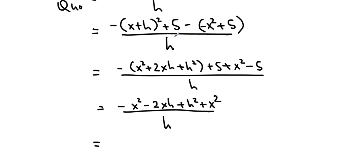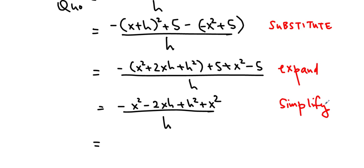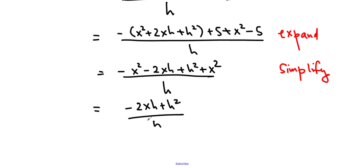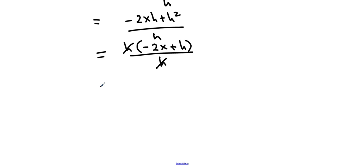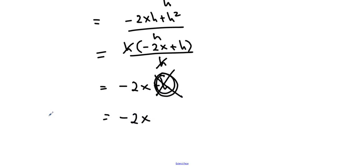Simplifying: the negative x squared and plus x squared cancel, the fives cancel, leaving negative 2xh plus h squared over h. I can common factor out an h to get h times negative 2x plus h, over h. Since h is not 0, I can cancel it, leaving negative 2x plus h. Because h is a negligibly small number, I can effectively cancel it out, giving the instantaneous rate of change as negative 2x.